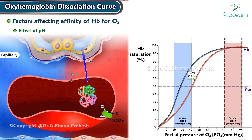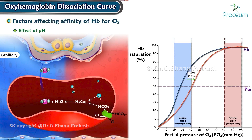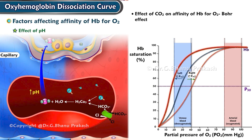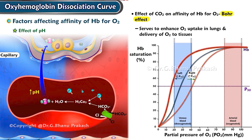Conversely, as blood passes through the lungs, carbon dioxide is exhaled, which results in an increase in pH, causing the oxyhemoglobin dissociation curve to shift to the left. This effect of carbon dioxide on the affinity of hemoglobin for oxygen is known as the Bohr effect, and it serves to enhance oxygen uptake in the lungs and delivery of oxygen to tissues.